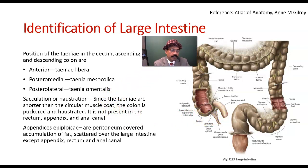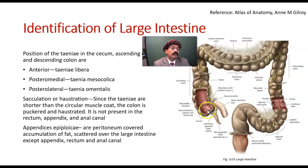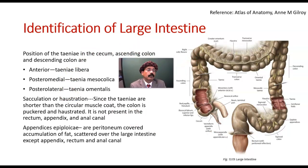That is all about the identification of the large intestine. The large intestine has a large caliber and is present on the peripheral part of the abdomen. The small intestine is present in the center and has less caliber. Small intestine has no taenia coli, no appendices epiploicae, and no haustration. The large intestine includes the vermiform appendix, cecum, ascending colon, transverse colon, descending colon, sigmoid colon, rectum and anal canal. That is all about the identification of the large intestine and its difference from the small intestine because of these characteristics.